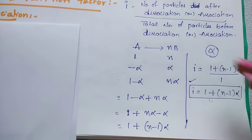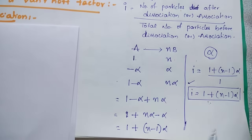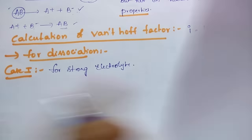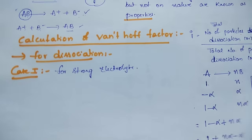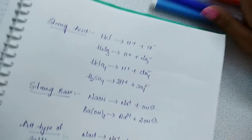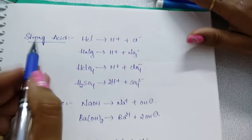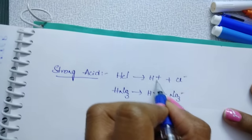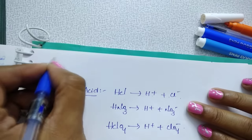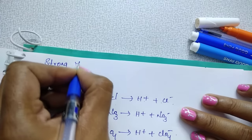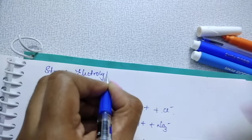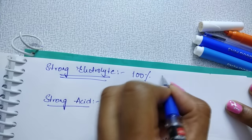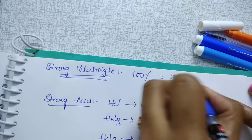Let us discuss two cases under dissociation. Case 1: for strong electrolytes. A strong electrolyte undergoes complete ionization — 100% ionization, meaning alpha equals 1. For strong acids like HCl, which dissociates into H⁺ and Cl⁻.